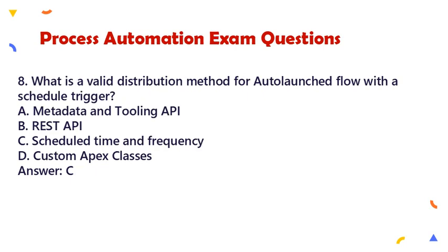Question 8: What is a valid distribution method for an auto-launched flow with a schedule trigger? a. Metadata and Tooling API, b. REST API, c. Scheduled Time and Frequency, d. Custom Apex Classes. Answer: c.